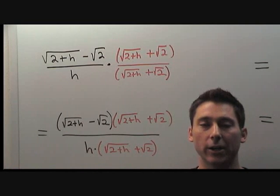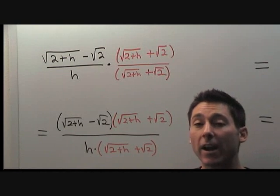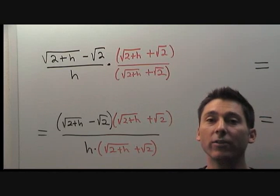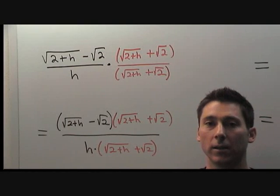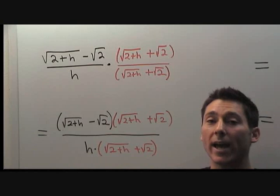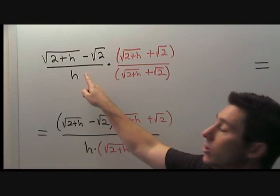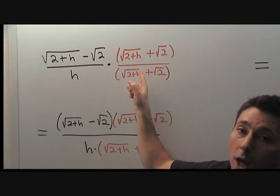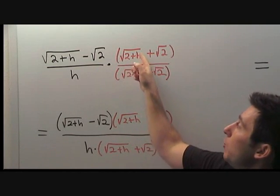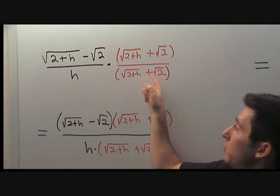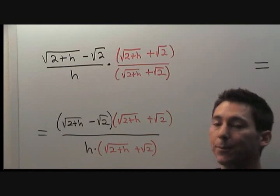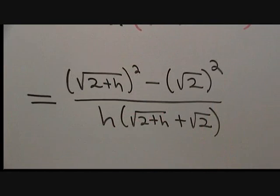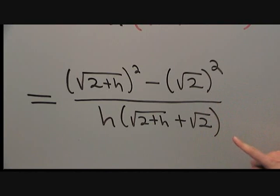Now we know that multiplying the numerator by its conjugate will help us greatly. However, we have to be very careful with how we introduce the conjugate. Whenever you have a fraction, the way to introduce a term is to multiply by a form of one, rewritten in a way that helps you the most. Therefore, we take the original expression and multiply by one, written as root two plus h plus root two, all over root two plus h plus root two. We multiply top and bottom by each piece, leaving the bottom as it is.